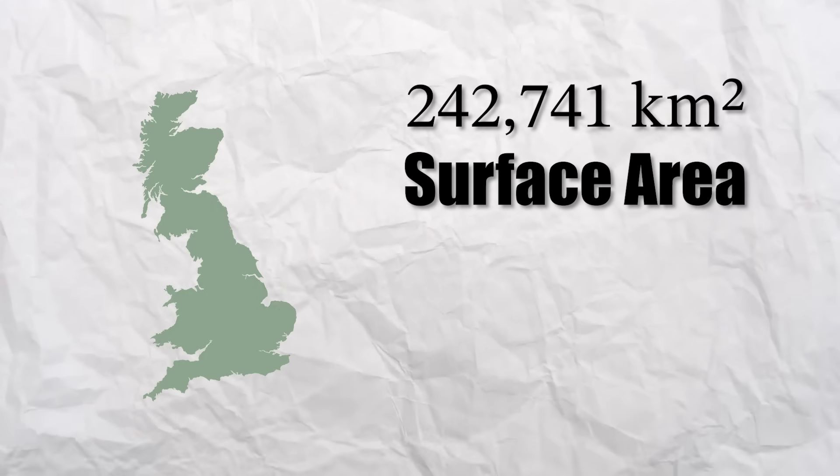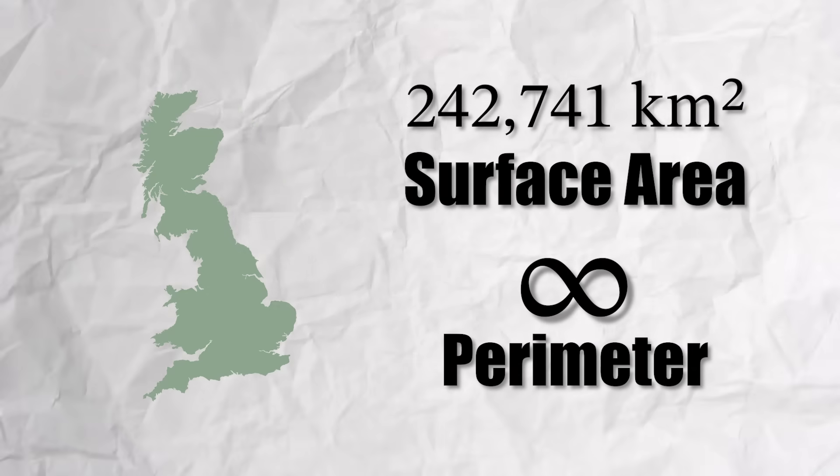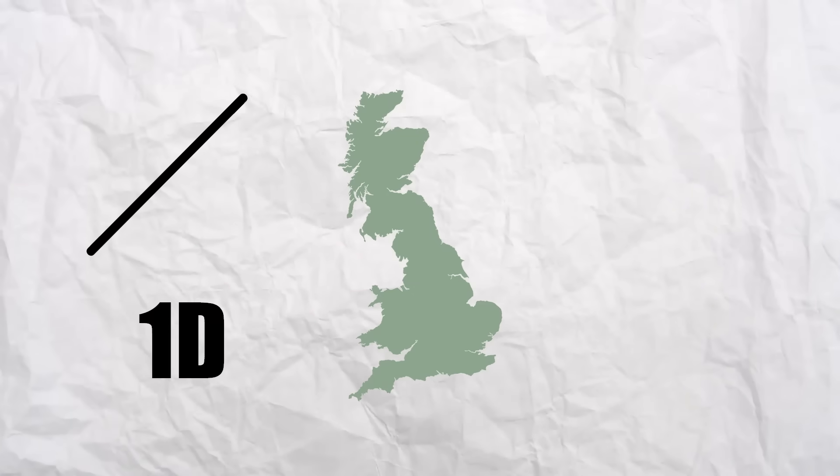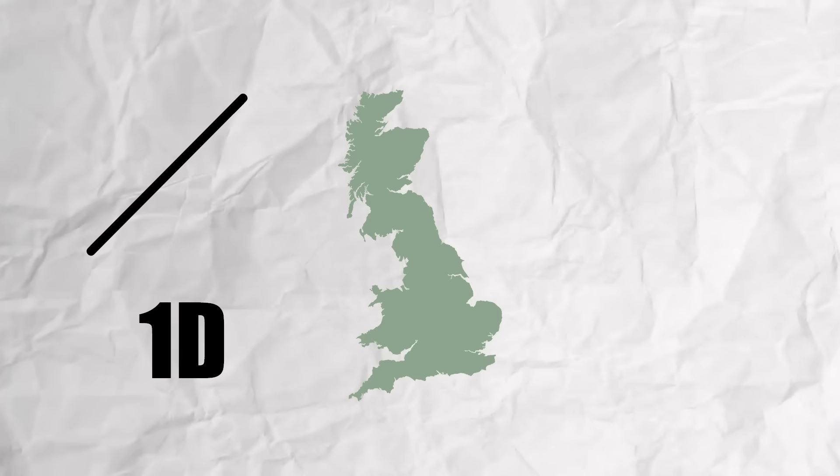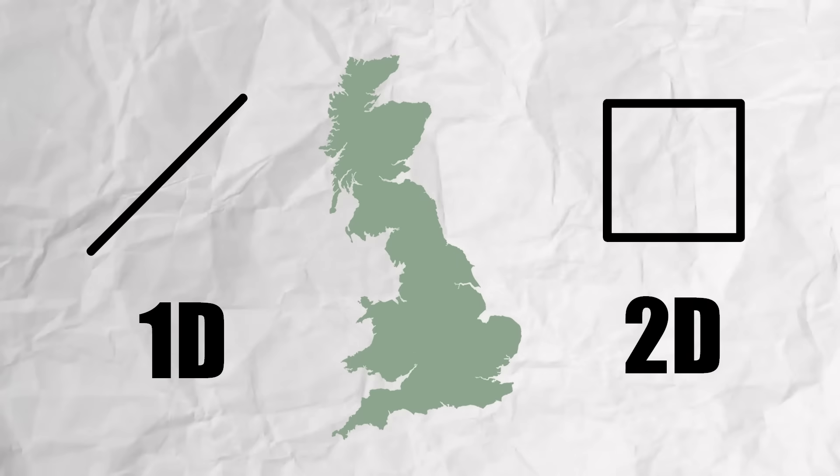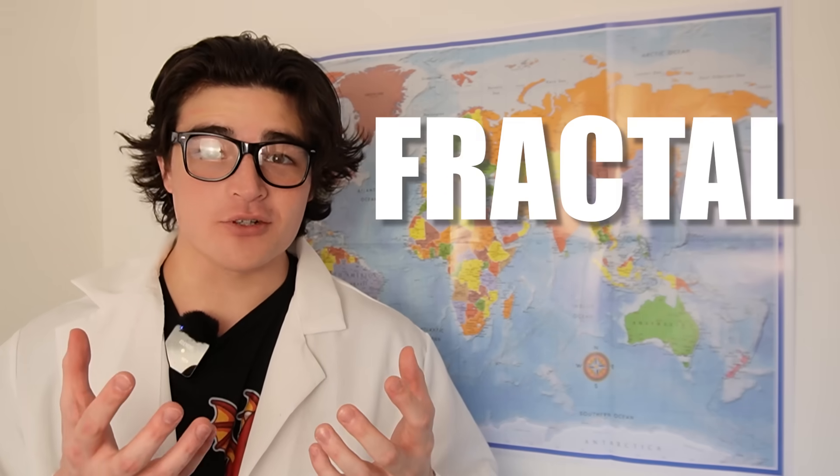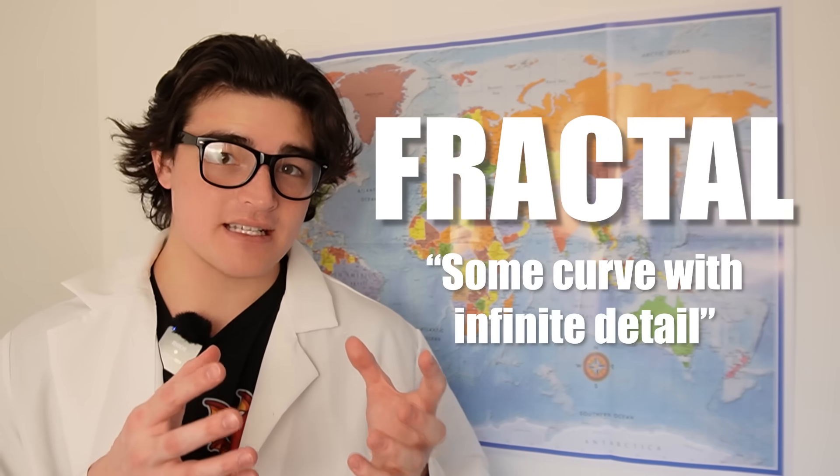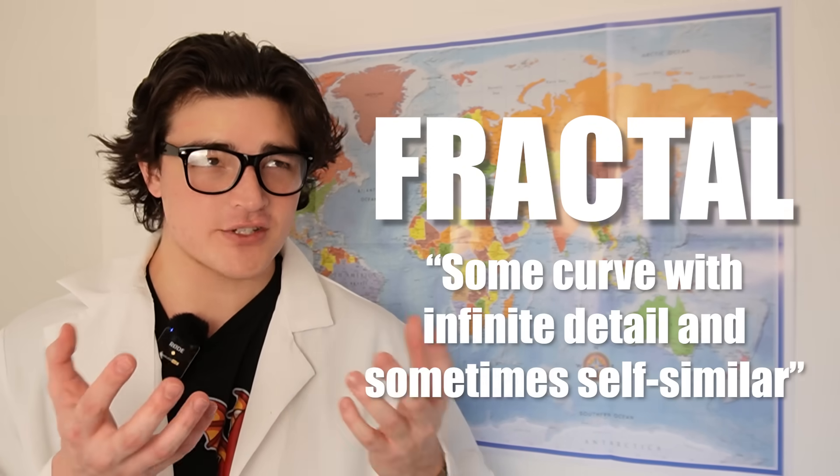So here we have a shape which has finite surface area, but an infinite length. We can't really describe this through a one-dimensional line, and its properties don't fit with 2D objects. So the coastline of Britain lies somewhere in between. And this brings us to the idea of a fractal, which is some curve with infinite detail, and sometimes self-similar.